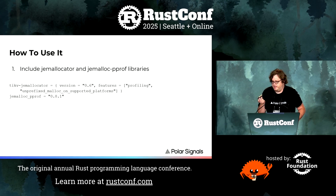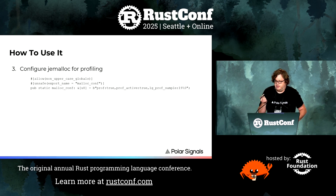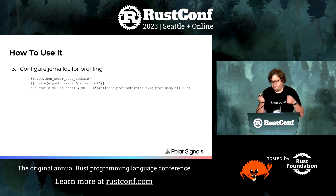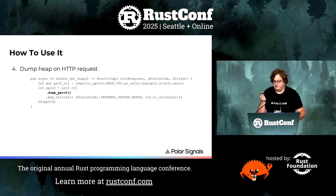Here's how you do it: you include the jemalloc allocator — tikv-jemalloc-ctl is how you use jemalloc in Rust — and then our jemalloc PPROF library which does this conversion. We have docs for all this, so you don't have to retain everything right now. You designate jemalloc as your global allocator, configure jemalloc for profiling with a special symbol that jemalloc knows how to look for, and then set up something like an Axum handler to dump the heap on HTTP requests so something can scrape and download these profiles.